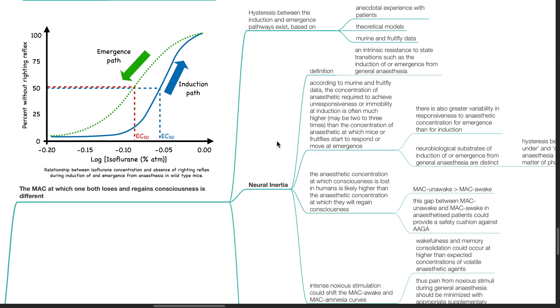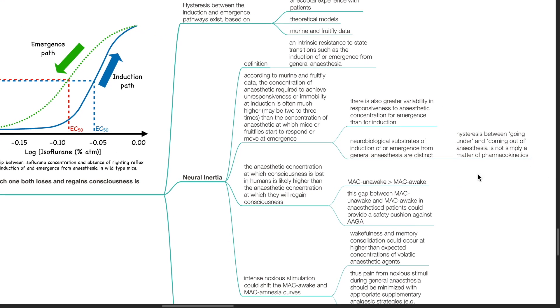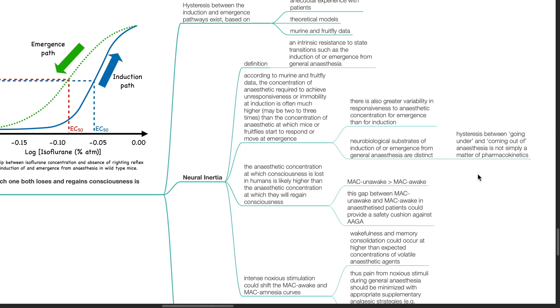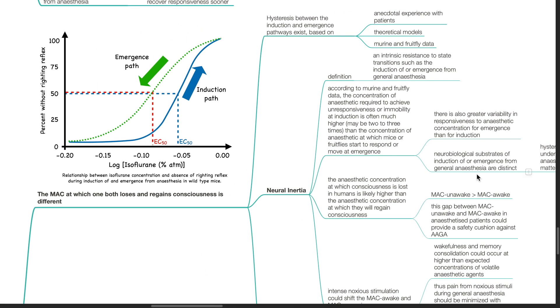Neurobiological substrates of induction of or emergence from general anesthesia are distinct. Hysteresis between going under and coming out of anesthesia is not simply a matter of pharmacokinetics. The anesthetic concentration at which consciousness is lost in humans is likely higher than the anesthetic concentration at which they will regain consciousness, i.e. MAC unawake is higher than MAC awake.